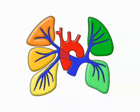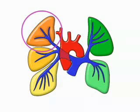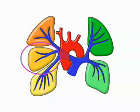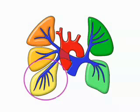In the right lung, in the upper lobe there are three segments, in the middle lobe two segments, and in the lower lobe five segments.